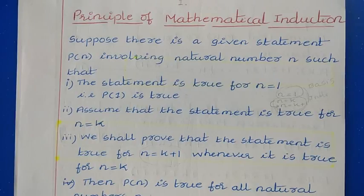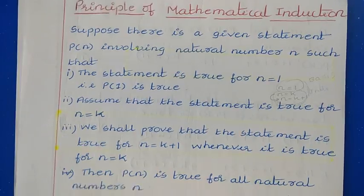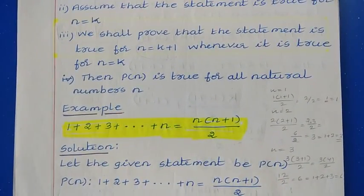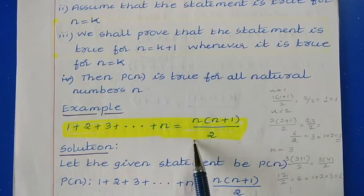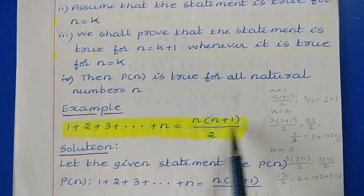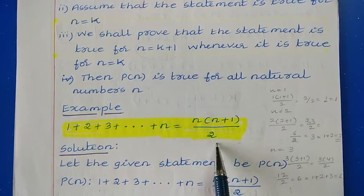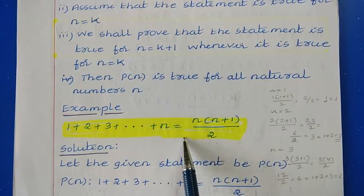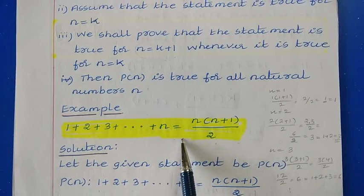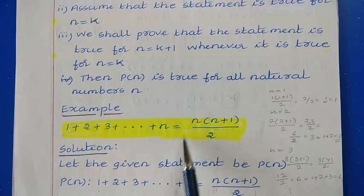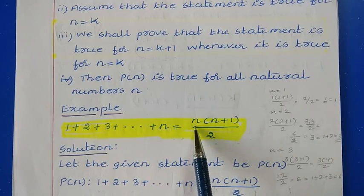Here we use a mathematical statement. Consider the statement: 1 plus 2 plus 3 plus so on up to plus n is equal to n into n plus 1 divided by 2. This is a mathematical statement which is already proved for the set of natural numbers, where n represents the set of natural numbers.